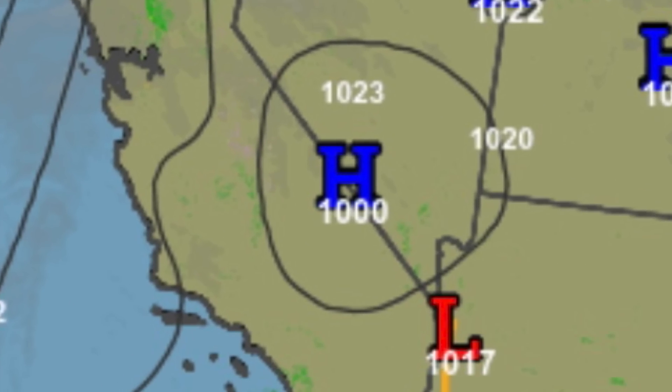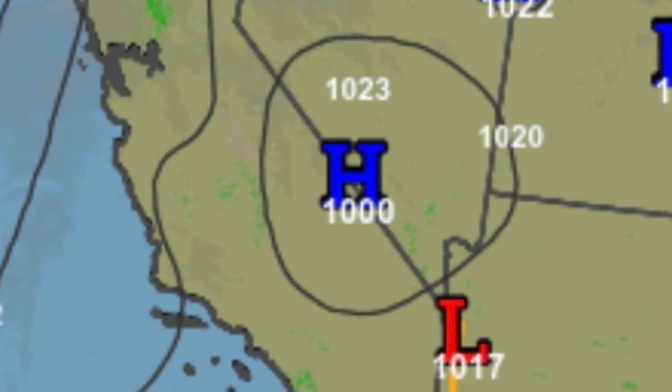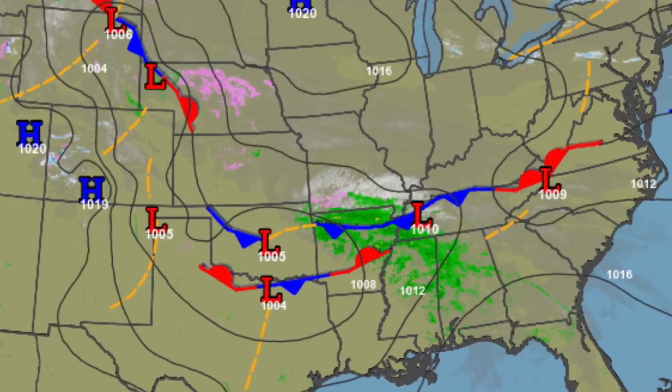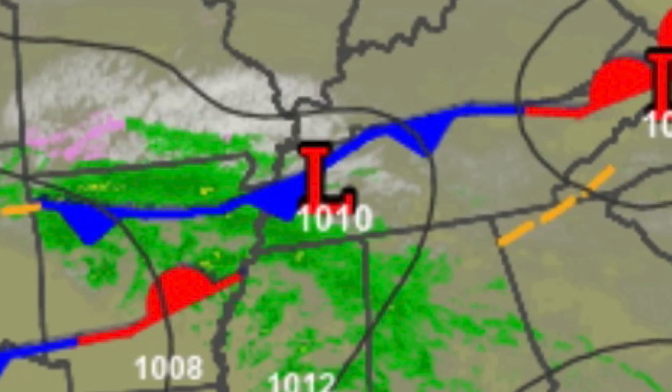Item number one is pressure systems. High pressure systems are generally your friends. If you see a blue H on the chart, it doesn't mean perfect weather, but it usually means fewer surprises. Low pressure systems — the red L's on the charts — are the weather makers. They're colored red for a reason. If there's something interesting happening in the atmosphere — clouds, precipitation, turbulence — you can almost guarantee that a low pressure system is involved.